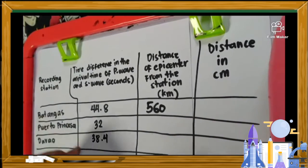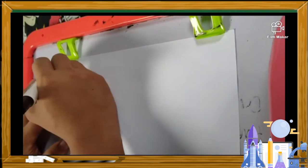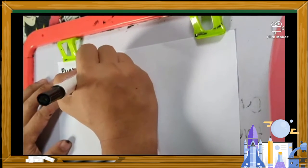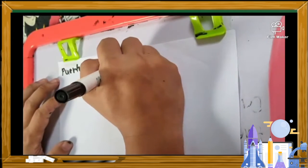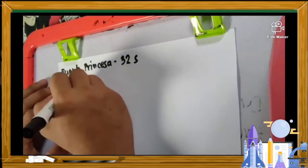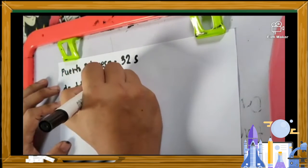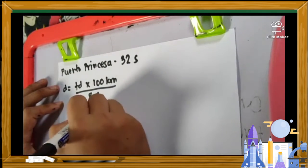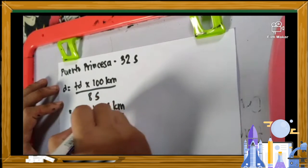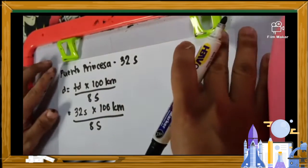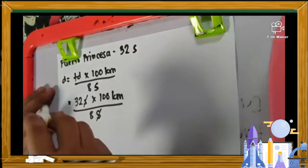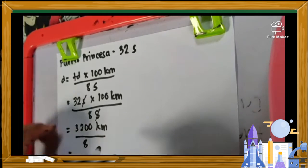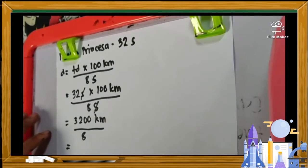For our next item, we have Puerto Princesa, which is part of Palawan. The given is 32 seconds. Again, we are going to use the formula D equals Td times 100 kilometers all over 8 seconds. So we have 32 seconds times 100 kilometers all over 8 seconds. Cancelling the seconds, we have 3,200 kilometers divided by 8, which equals 400 kilometers.